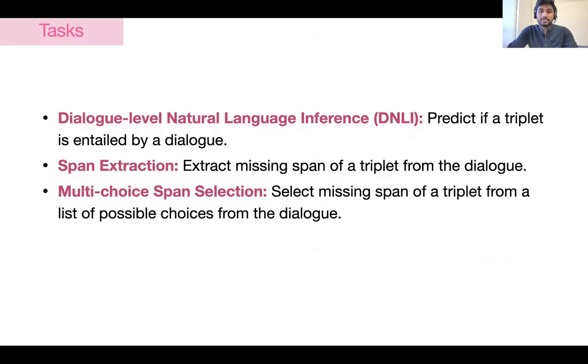We designed three tasks on this dataset that require dialogue-level common sense reasoning. Number one is dialogue-level natural language inference. Number two is span extraction. And number three is multi-choice span selection. The first task is analogous to natural language inference. The other two are distinct forms of question-answering tasks.